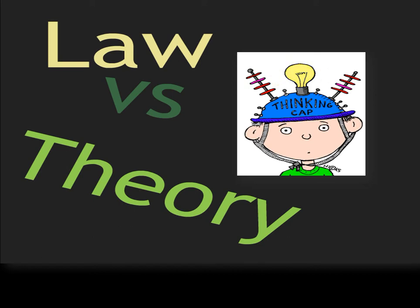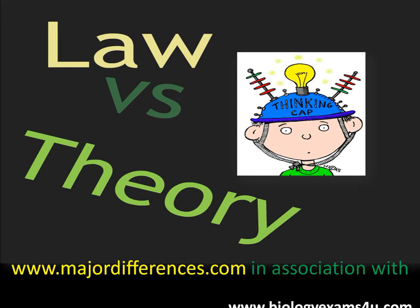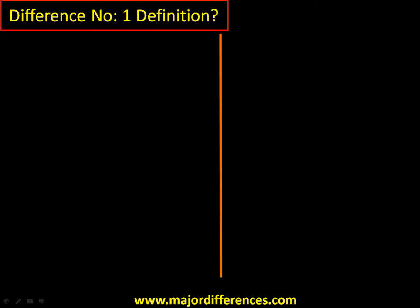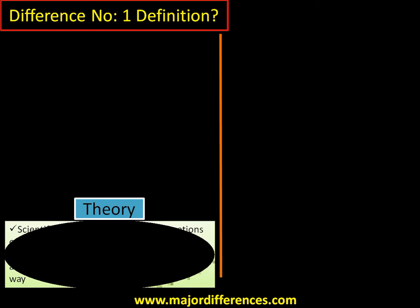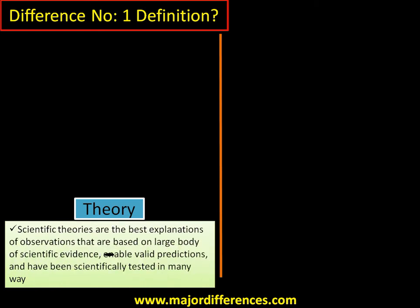Today the topic of our discussion is how a theory is different from a law. Starting with definitions: a scientific theory is the best possible explanation of observations, based on a large body of scientific evidence that has been scientifically tested in many ways and that can be scientifically tested further.